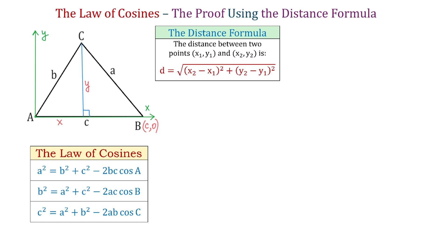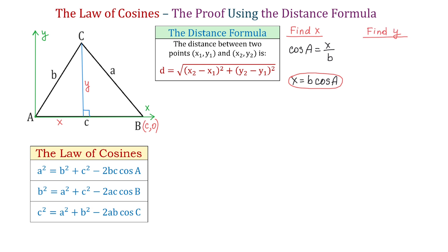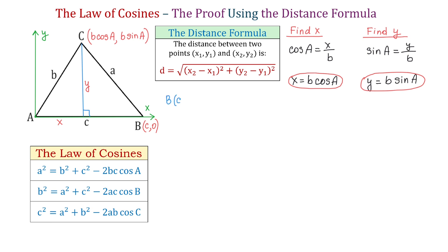Using the cosine function, we write that cosine of angle A equals the adjacent side x divided by hypotenuse B. So cosine of angle A equals x over B, which gives us x equals B cosine of angle A. Using the sine function, we write that sine of angle A equals the opposite side y divided by hypotenuse B. So sine of angle A equals y over B, which gives us y equals B sine of angle A. These are the coordinates of point C.